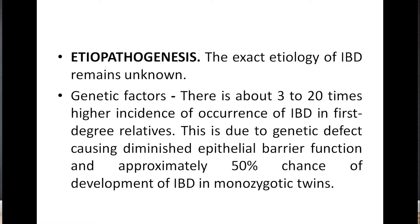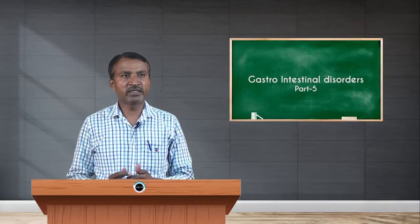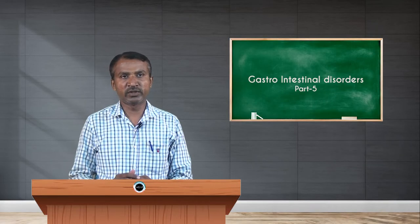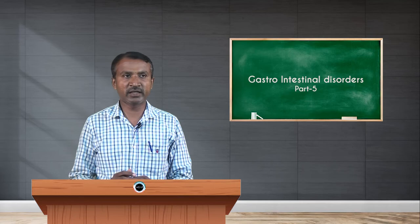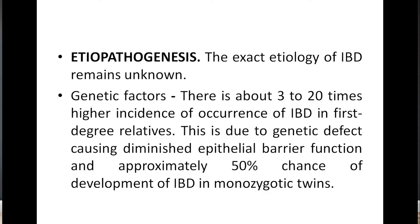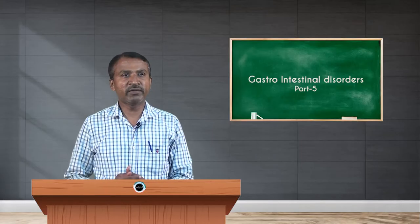The exact etiology of inflammatory bowel disease remains unknown. Genetic factors play a major role — there is about three to twenty times higher incidence of IBD in first-degree relatives. This is due to a genetic defect causing diminished epithelial barrier function, and there is approximately a fifty percent chance of development of IBD in monozygotic twins.